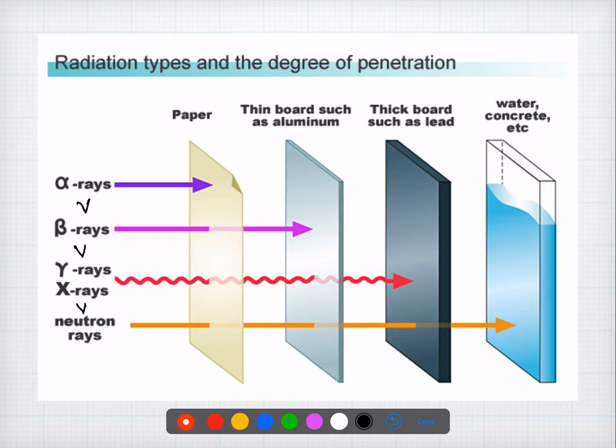Moving to question number four: when the time of exposure is doubled, the best option among the list is that the number of photons generated is doubled. A detailed explanation was given in the explanation part — you can just have a look. It's a very simple explanation.